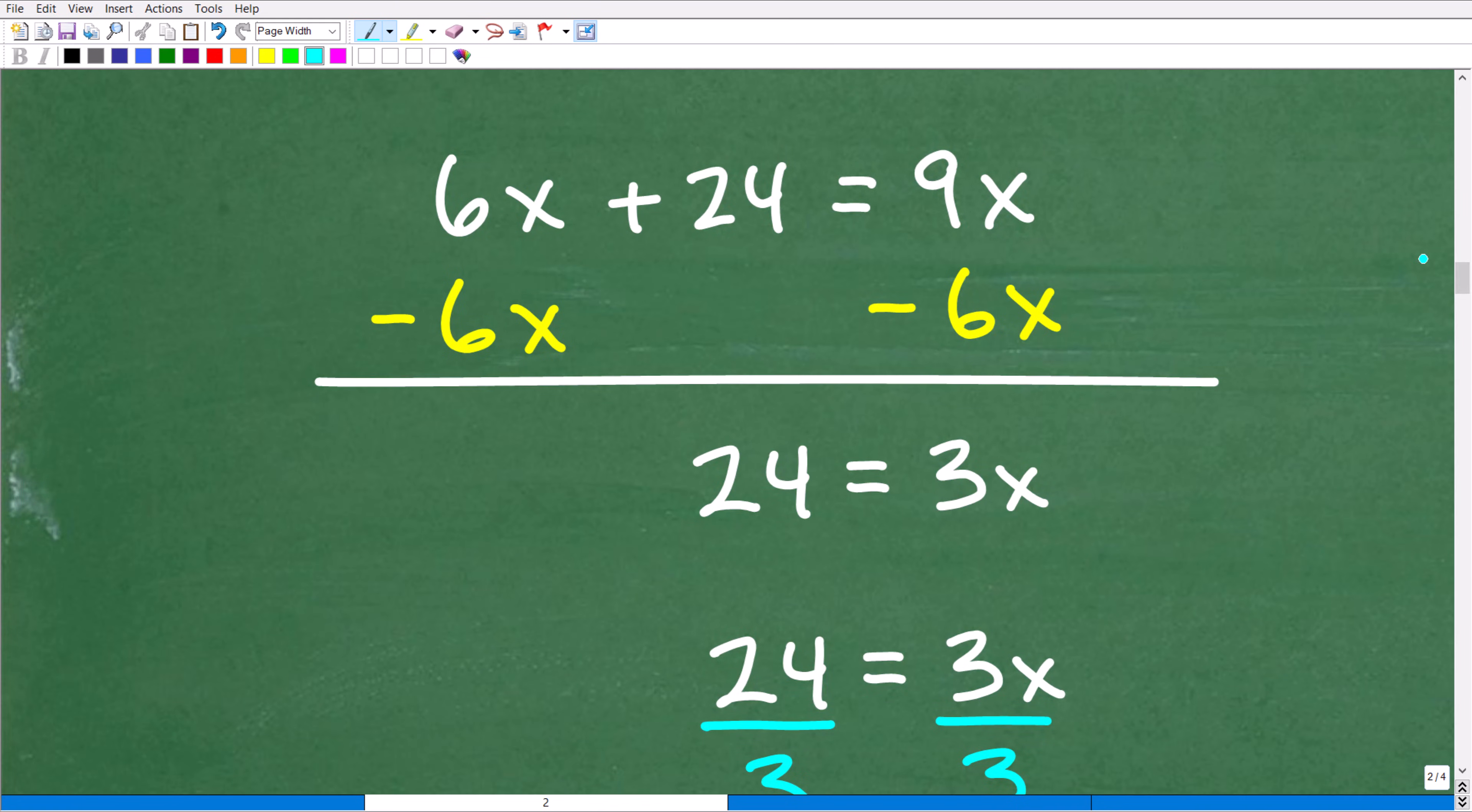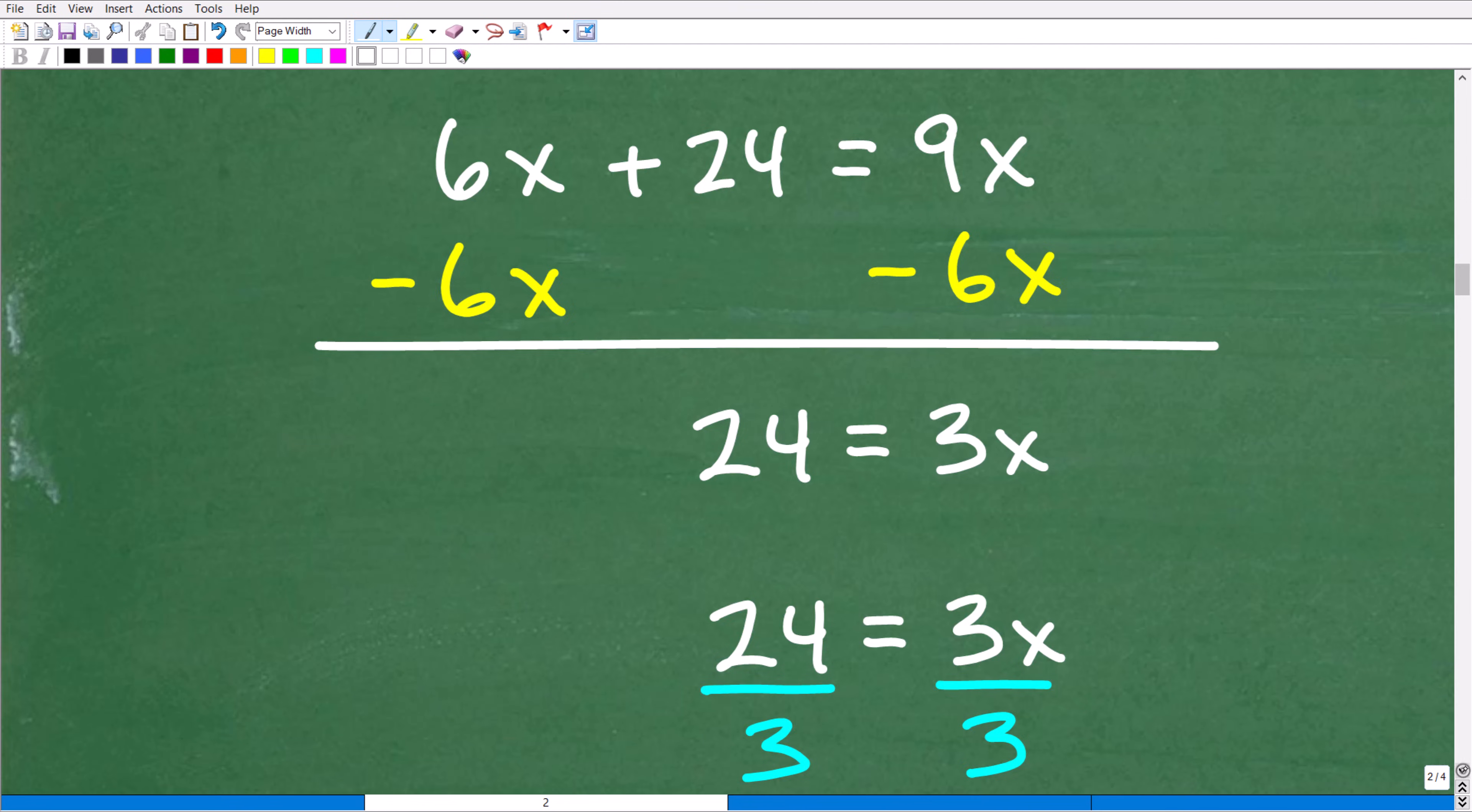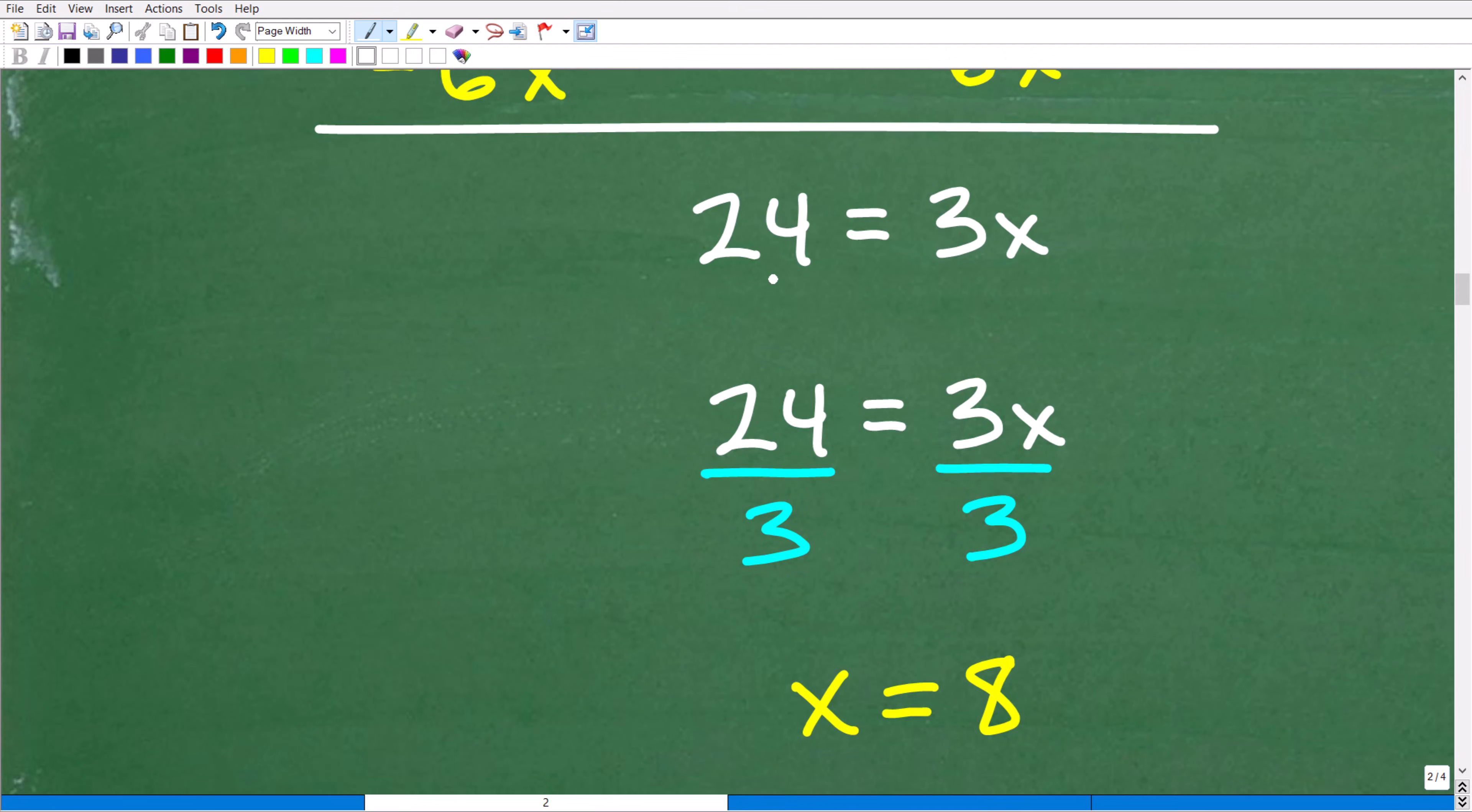Now we can simply solve this basic equation. Typically when solving equations, you want variables on your left and numbers on your right. But I have my number here by itself, so I'll move my variable to the right hand side - it saves me work. Subtract 6x from both sides. We have 24 equals 3x. How do we solve for x? Simply divide both sides by 3, so 24 divided by 3 is 8. x equals 8.